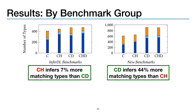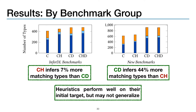There was a notable breakdown when we looked at the different benchmark groups. For the InferDL benchmarks, it turned out that ch — the heuristic configuration — inferred 7% more matching types than cd, the DeepSim configuration. On the other hand, for the new benchmarks, cd inferred 44% more matching types than ch. The reason for this discrepancy is that heuristics were developed while applying InferDL to that left group of benchmarks. This highlights both the strength and weakness of heuristic rules: heuristics perform well on their initial target programs, but they may not generalize to new programs. The DeepSim network, on the other hand, can be effective at generalizing.